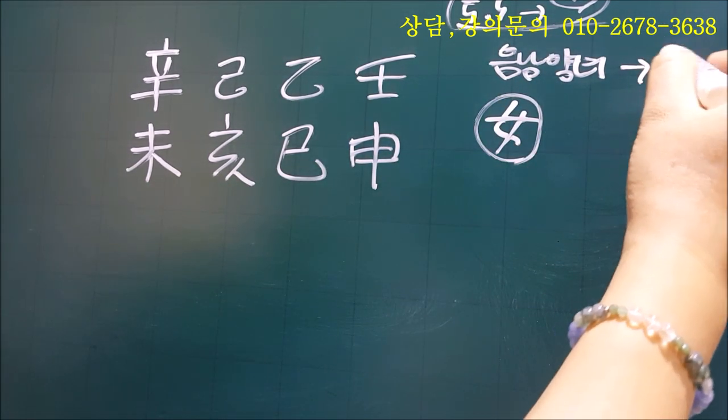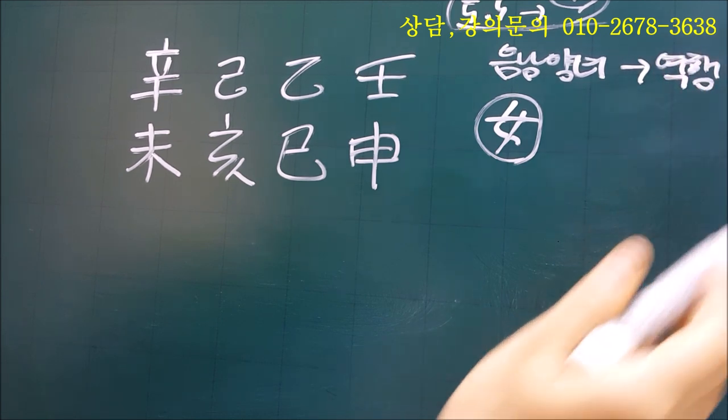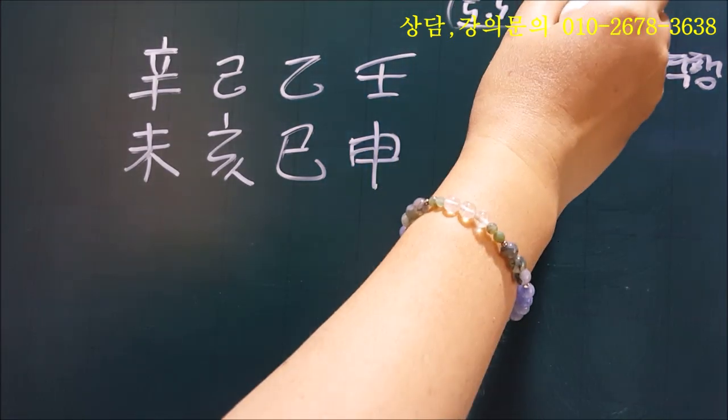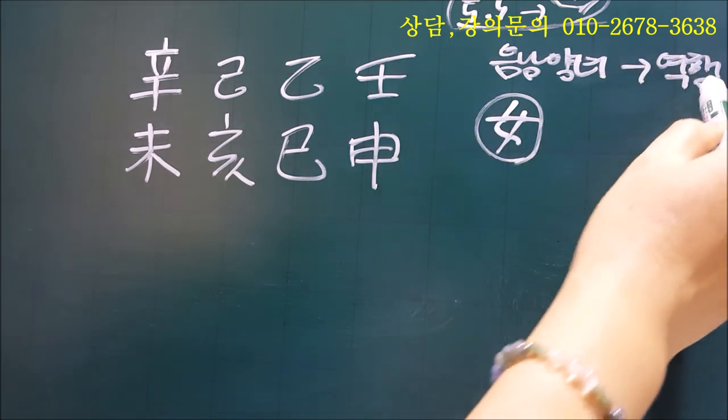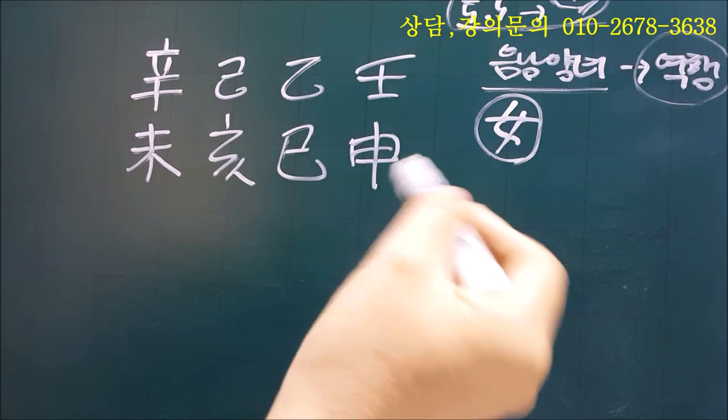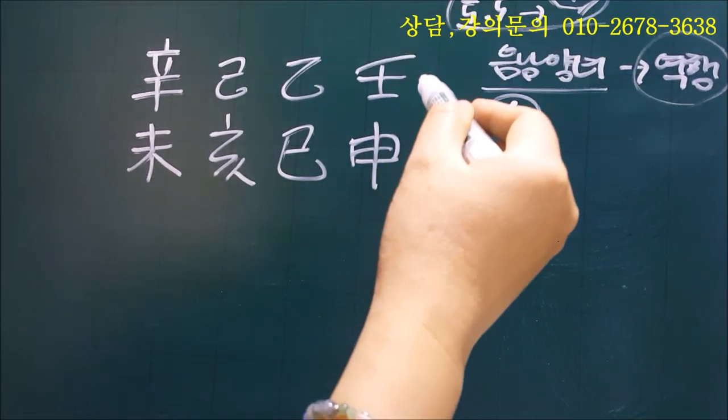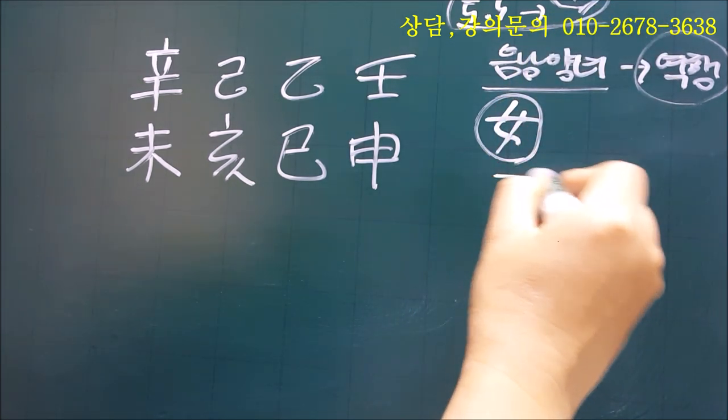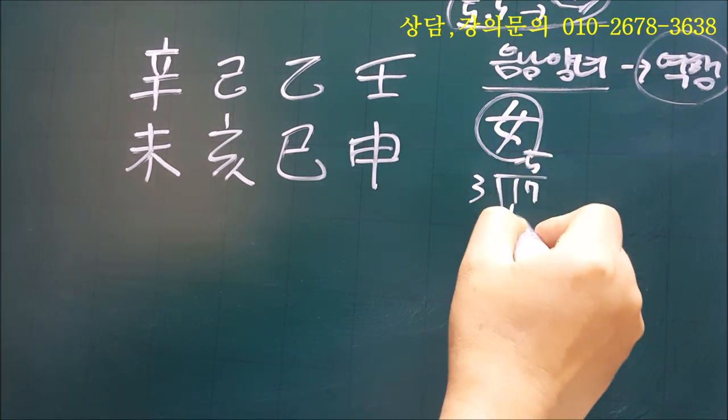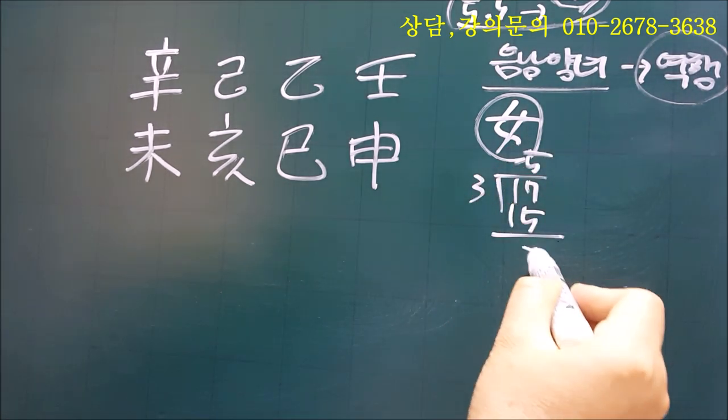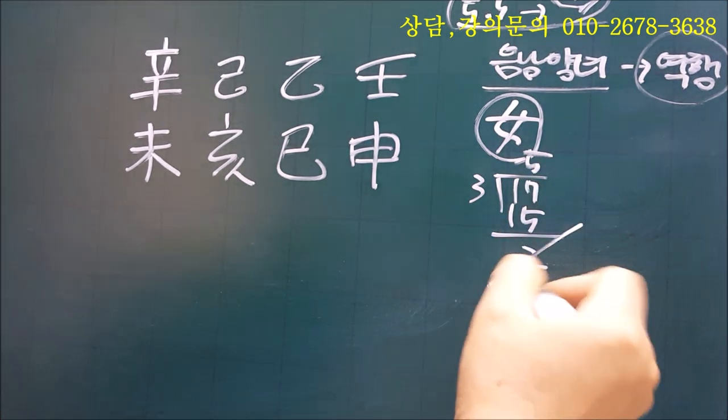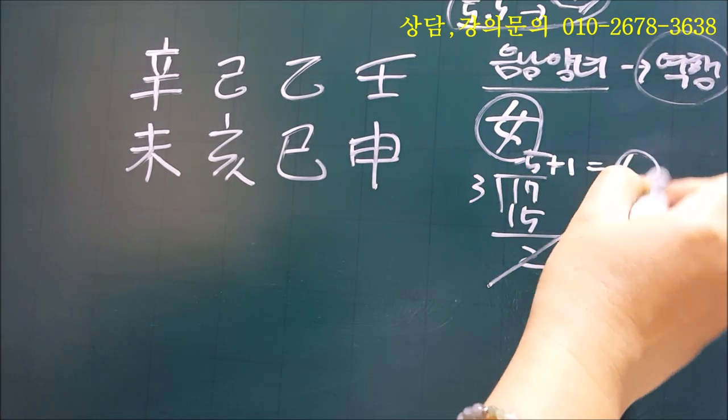음남양녀는 배우셨을 때 순행이 아니라 역행 방향으로 대운이 간다고 배우셨을 겁니다. 5월 5일에서 17일이라고 말씀드렸잖아요. 이것은 역행하는 이 세트에 들어있는 분들은 지나온 날짜를 가지고 계산을 하면 되기 때문에 미리 적어놓은 부분이에요. 그러면 17일에서 대운 수를 구하기 위해서 3을 나누면 3, 5, 15 해서 몫은 5가 나오고 나머지가 2가 나옵니다. 이렇게 2가 나올 때는 2를 버리고요. 몫에다가 1을 닿으면 대운 수를 6이 나옵니다.